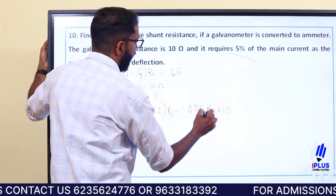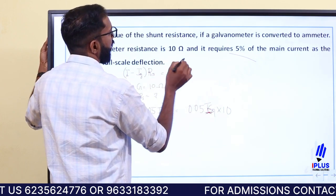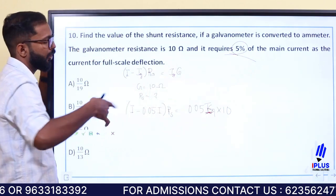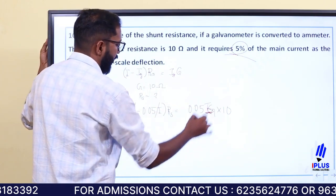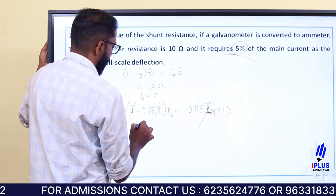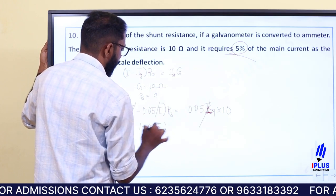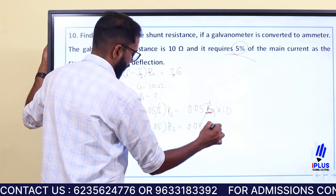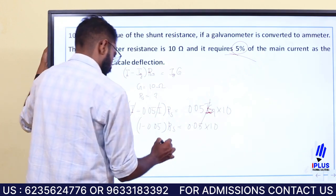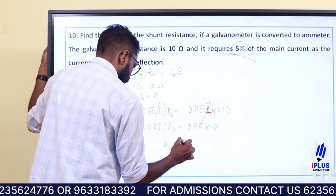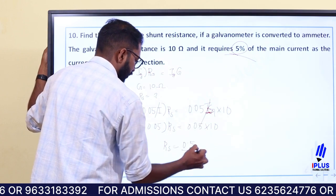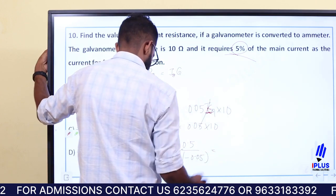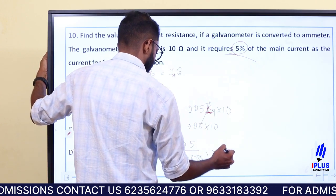If we have 0.05i into Rs equal to 0.05i into 10, converting 5% to 0.05, then Rs is equal to 0.05 divided by (1 minus 0.05), so 0.95 Rs equals 0.05 into 10, giving Rs approximately equal to 0.526 ohm.